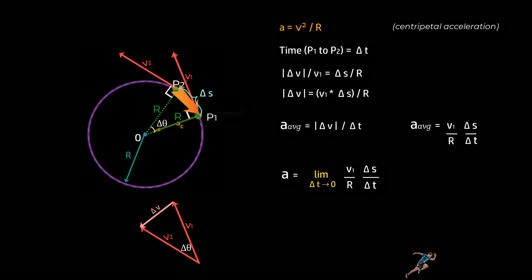And you can rewrite this expression by taking constants outside or a is equal to v1 upon r times delta s upon delta t as the limit of delta t tends to 0.